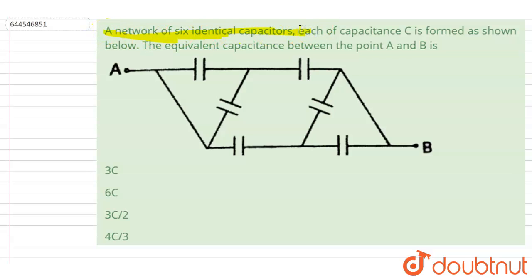identical capacitors, each of capacitance C, is formed as shown below. The equivalent capacitance between A and B is